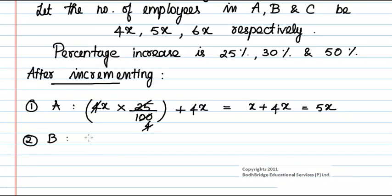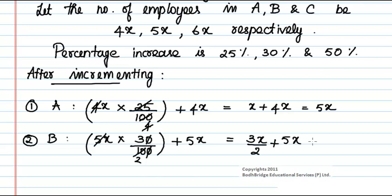Company B has a 30% increase with current employees 5x. So 5x × (30/100) + 5x. Simplifying, we get 3x/2 + 5x = 13x/2.